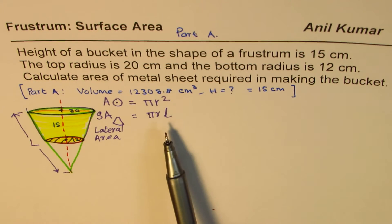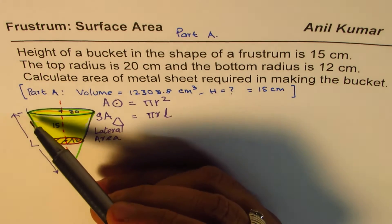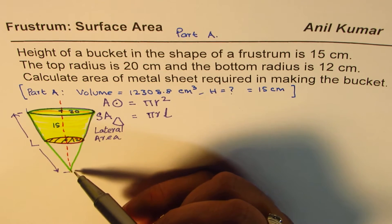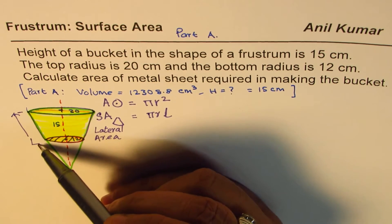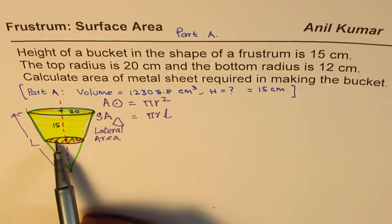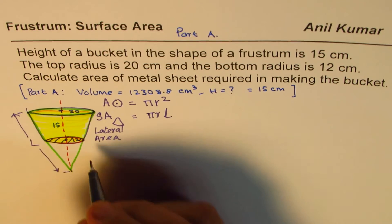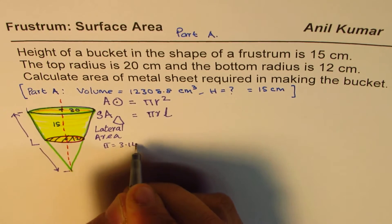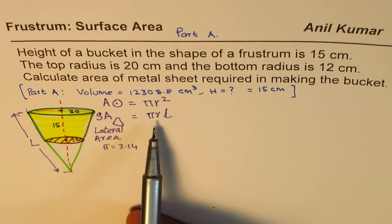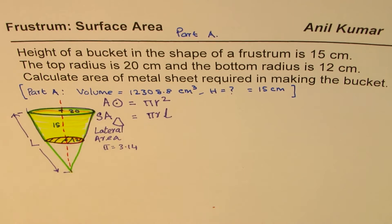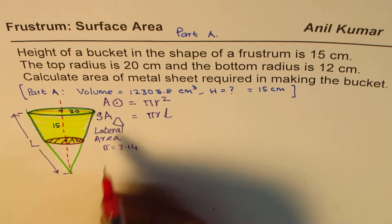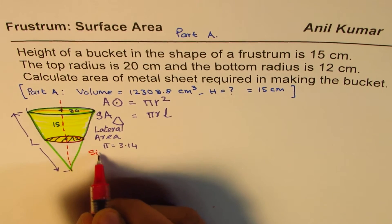Now in this formula, we clearly see that we need to find the slant lengths, which are unknown to us. The first part of this question will be to find those lengths — big and small — so that we can find the lateral area. For πr², we'll take pi as 3.14. But now we'll work on calculating the slant lengths. To do that, we will use the similar triangle concept.